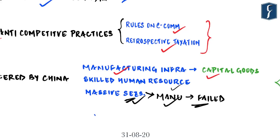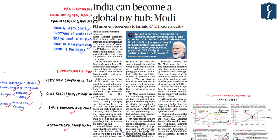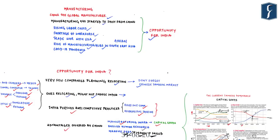Since India's SEZs have not worked, even if manufacturing shifts, there is no clear place for it to go — because SEZs were the places where manufacturing was expected to kick-start. Even after providing special incentives in SEZ regions, if we were unable to encourage manufacturing, how can we think of companies relocating to India? Prime Minister Modi has encouraged manufacturing of toys, but it still remains to be seen how effective these calls will be.